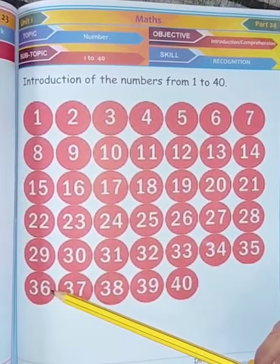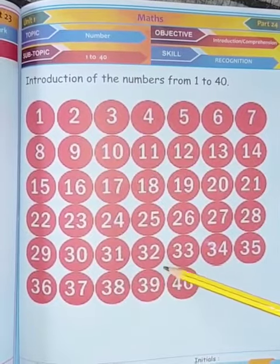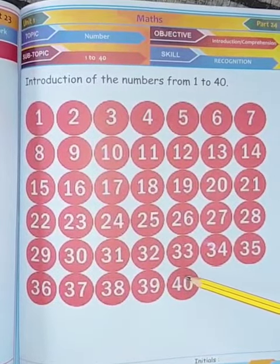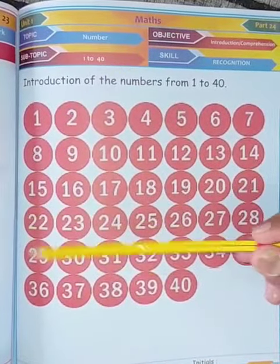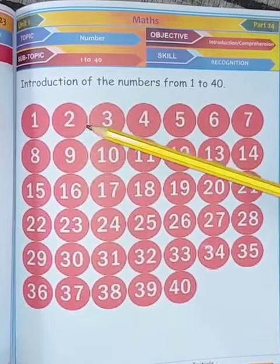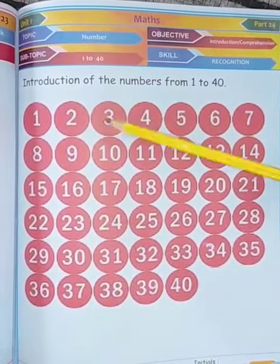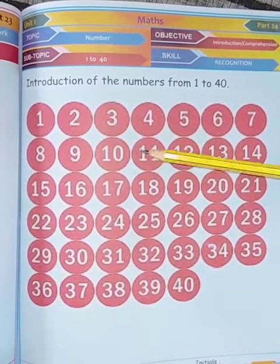Thirty-six, thirty-seven, thirty-eight, thirty-nine, forty. These are the numbers from 1 to 40. You have to say these numbers two or three times.